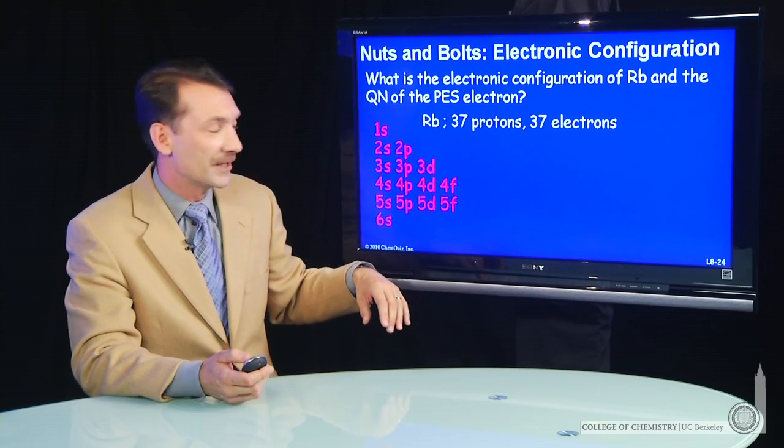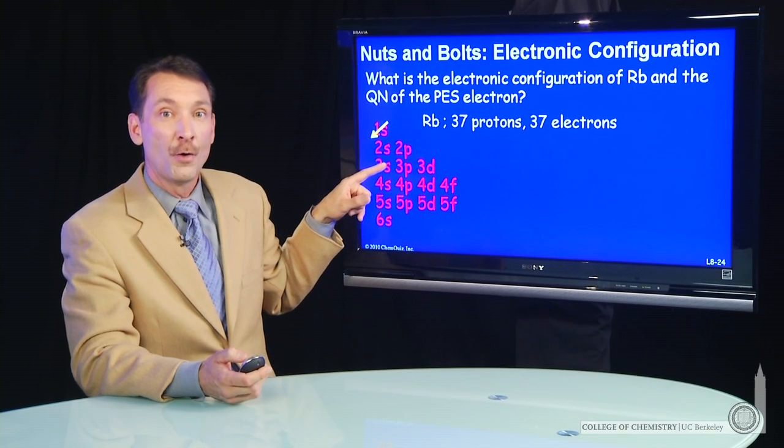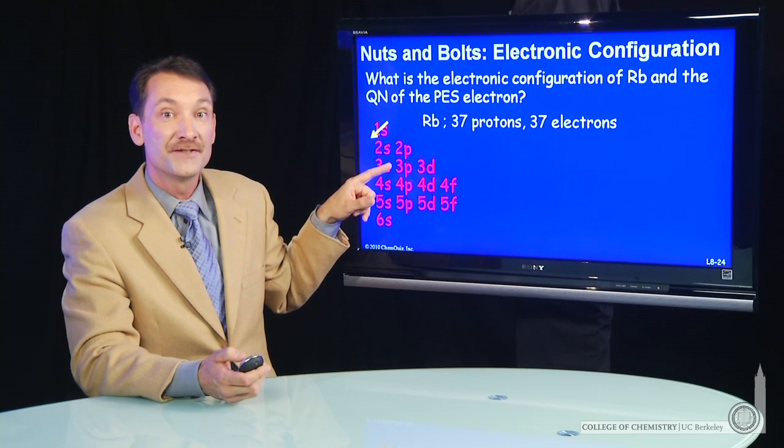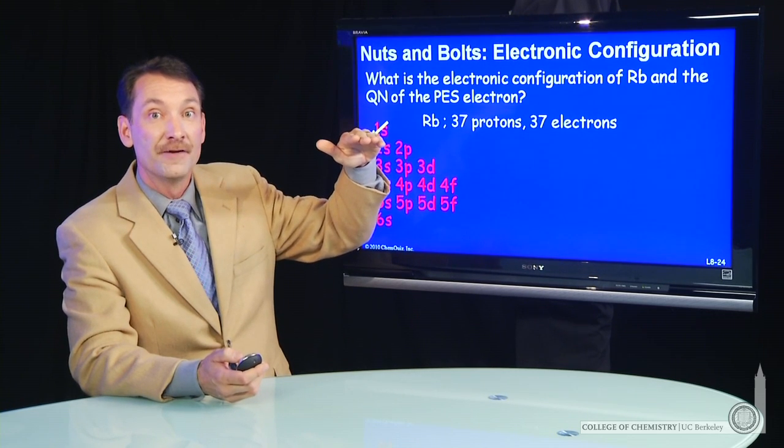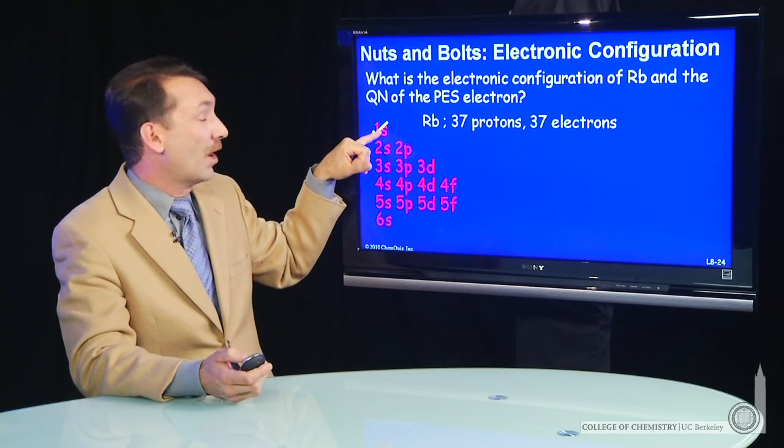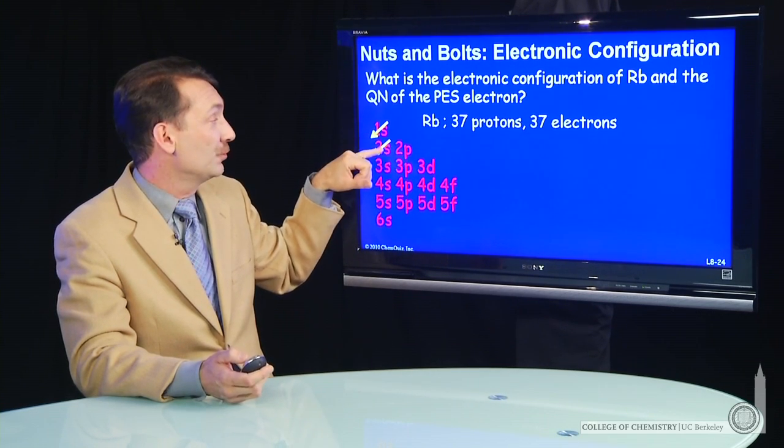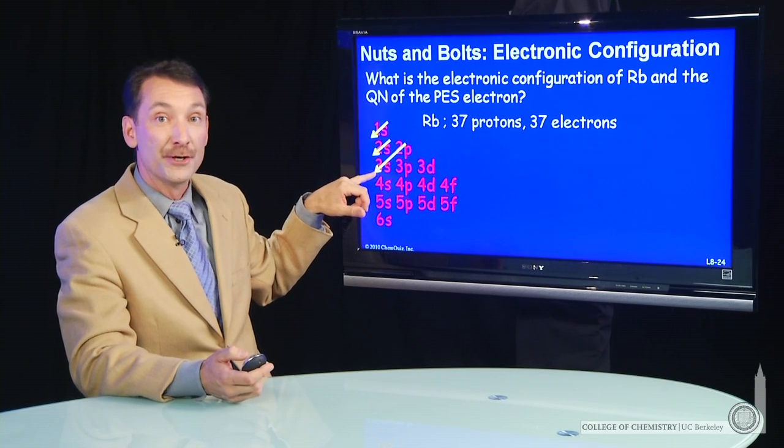Then you make diagonal lines. This is the order that the electrons fill in. It's the energy ordering of orbitals when there are many electrons present. So 1s is the first orbital to fill, then 2s, and you keep writing diagonal lines, then the 2p, then the 3s.